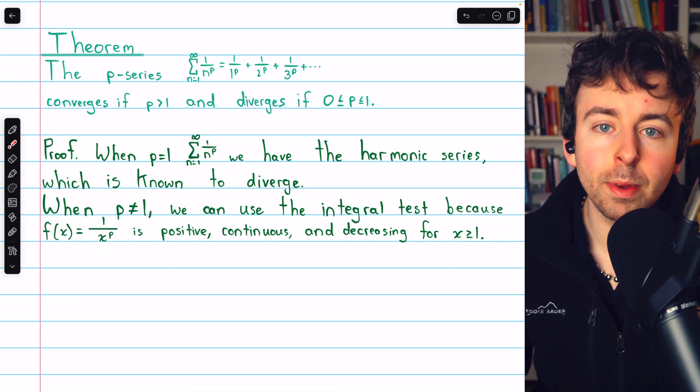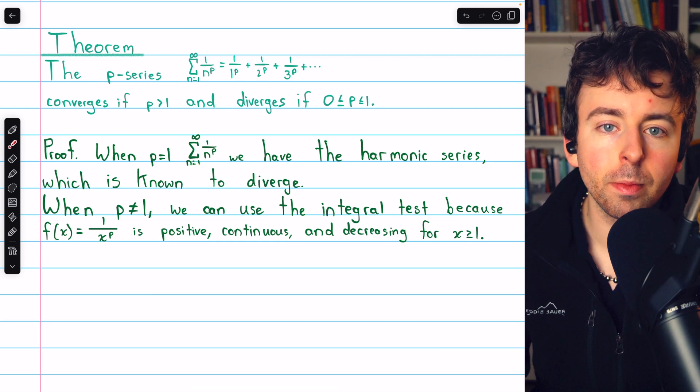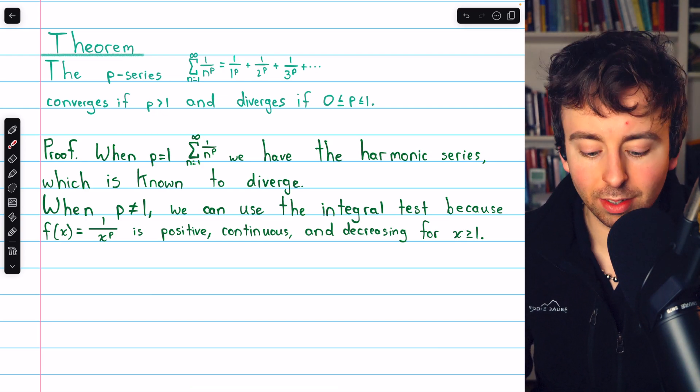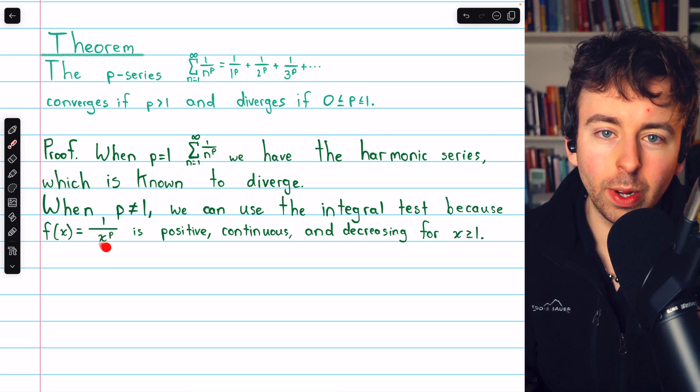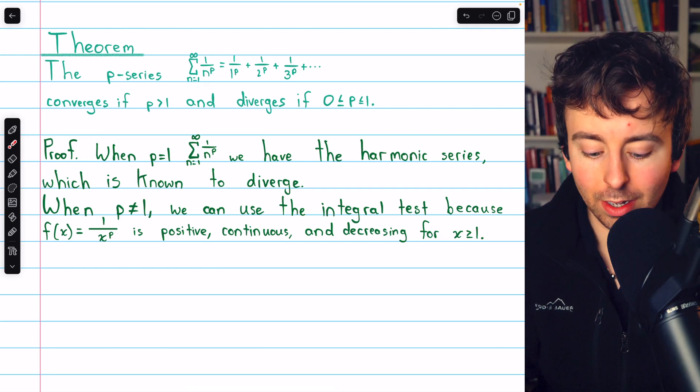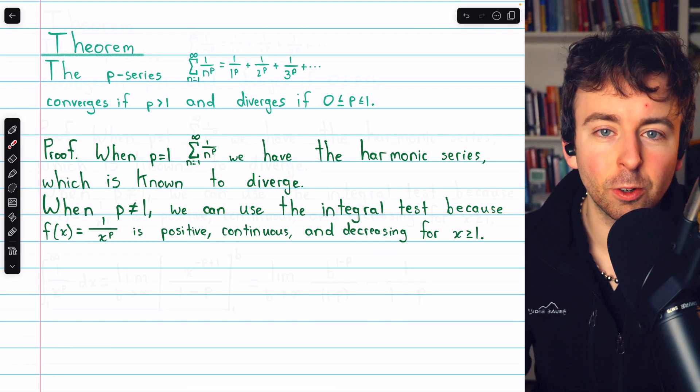x to the p is just going to get bigger and bigger as x gets bigger. If p is something like 1 tenth, then we're taking tenth roots of the denominator, and that's going to grow rather slowly, but the denominator does still grow, and so the function will be decreasing.